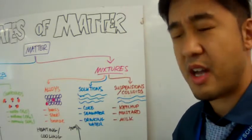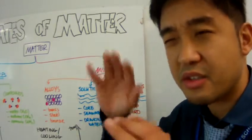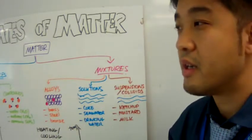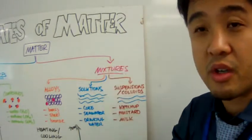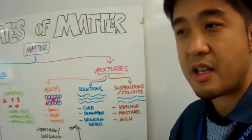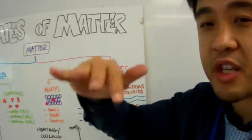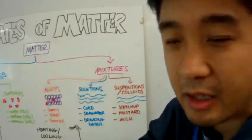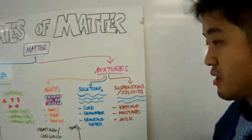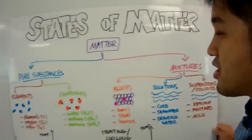Mustard also settles down if you leave it out for too long. Milk also settles out if you leave it out for too long. Juices are suspensions because when you make fresh juice and you just leave it in a glass for a few minutes, you can see a frothy layer on the top and then clear, semi-clear liquid at the bottom. Those are what substances and mixtures are.